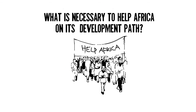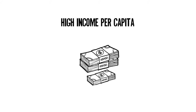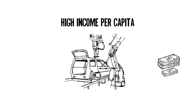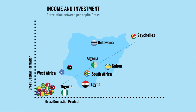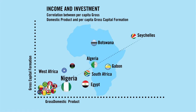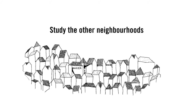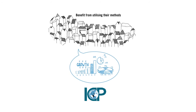Several countries are demonstrating what is necessary to help Africa on its development path. A high gross capital formation and a high income per capita is what Africa needs to unlock its trade and stimulate industrialization for jobs and development. Nigeria is currently the biggest economy on the continent, but it has a relatively low gross domestic per capita income and a low gross capital formation compared to the two other biggest economies, South Africa and Egypt. By increasing both of these values positively, Nigeria has the potential to revitalize the West African economies. Study the other neighborhoods, see what they are doing and how you might be able to benefit from utilizing their methods. This is what the ICP data tells us, and it should play center stage in Africa's industrialization strategy.